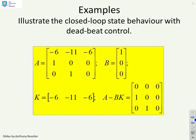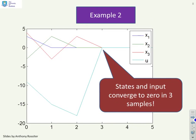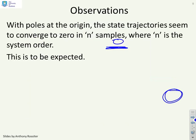Here's the second example. Now we've got three states and you can see with this particular k I can put all the poles on the origin. Here's typical behavior. All of the states and the input converge to zero, but this time in three samples not two samples. And the key point is they've all gone to zero, so hereafter you have zero.